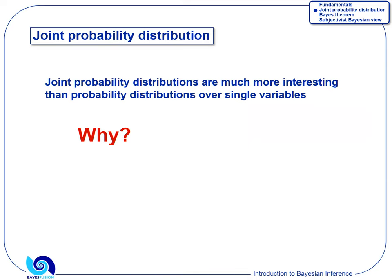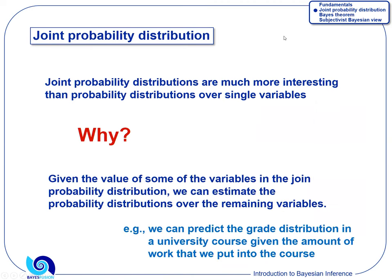The reason joint distribution is so important is that if you have a joint distribution over several variables, you can estimate the probability distributions of the remaining variables given the values of some. For example, if I have a joint distribution of work put in by a student and the grade they achieve, once a student tells me they spend five hours a week on this course, I can tell the student their grade is going to be around C plus. There's uncertainty, but it's quite safe to make a prediction from the joint probability distribution.